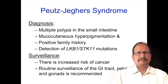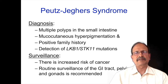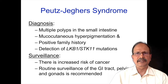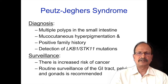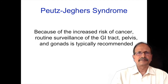Diagnosis of Peutz-Jeghers syndrome requires multiple polyps in the small intestine, mucocutaneous hyperpigmentation, positive family history, and demonstration of genetic mutations involving loss of heterozygosity of LKB1/STK11. Pathogenesis involves loss of heterozygosity of the tumor suppressor gene LKB1/STK11, which regulates polarization of cells and their growth and metabolism. These patients must undergo surveillance to catch early occurrence of adenocarcinoma in the large intestine and other areas. Routine surveillance of the GIT, pelvis, and gonads is typically recommended.